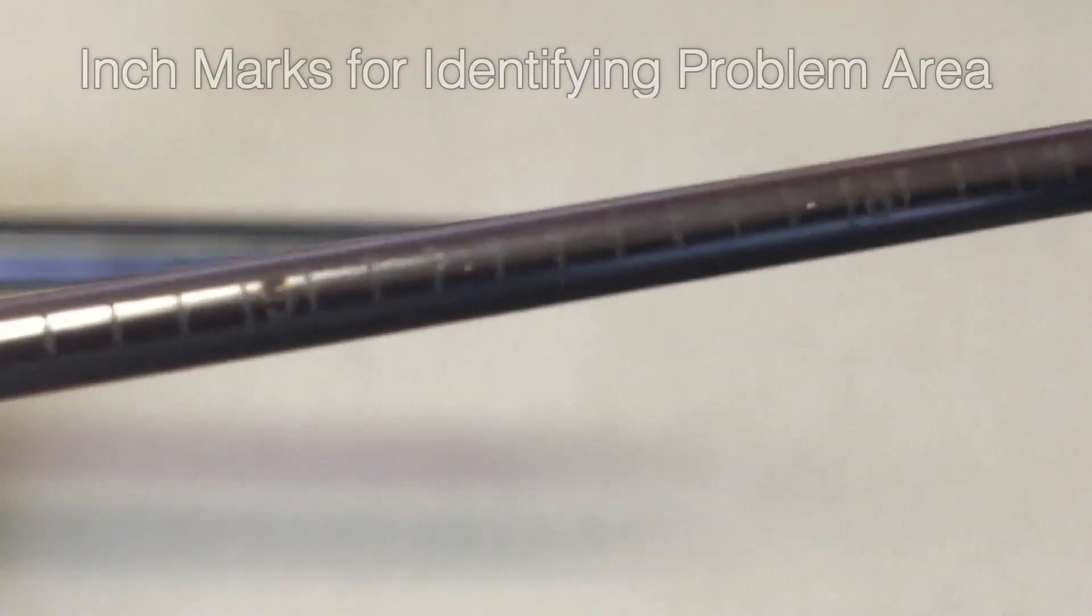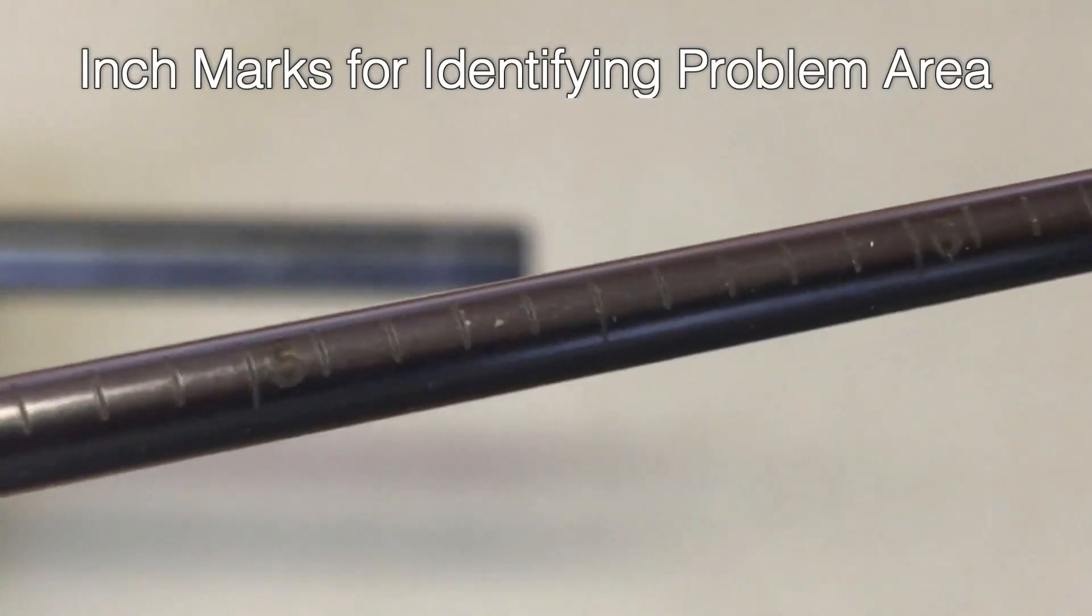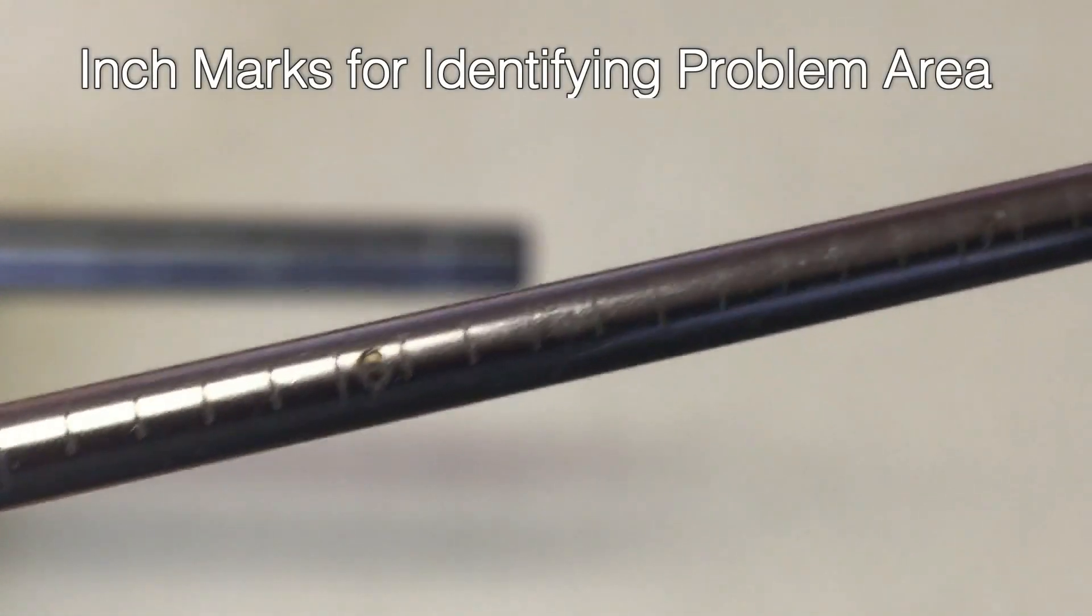Each of the boroscopes feature inch marks so that one can better estimate where the problem area is inside the barrel.